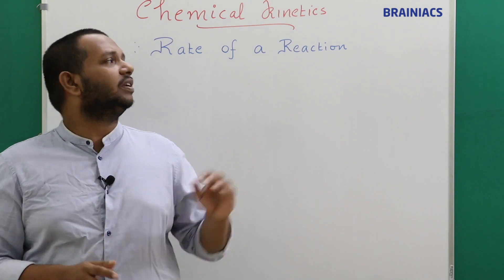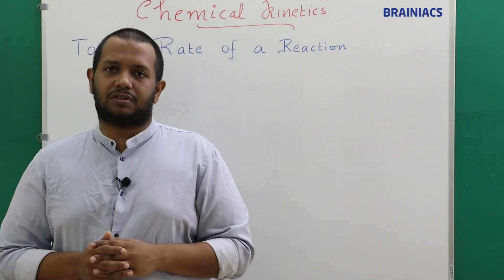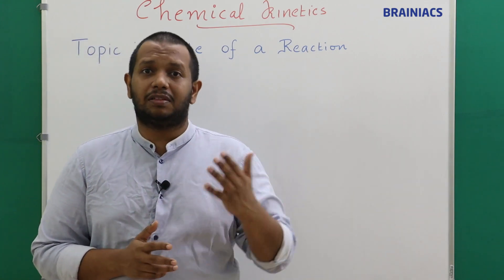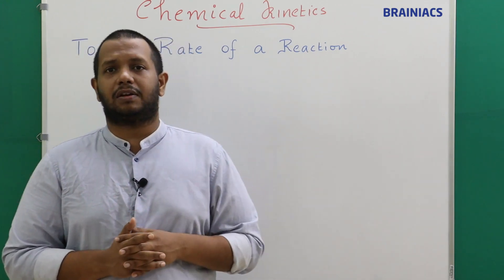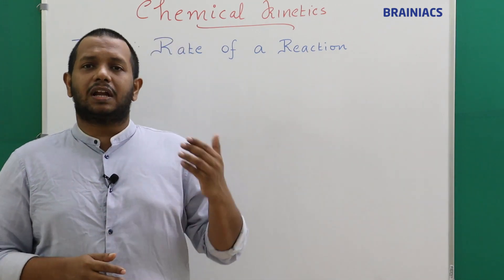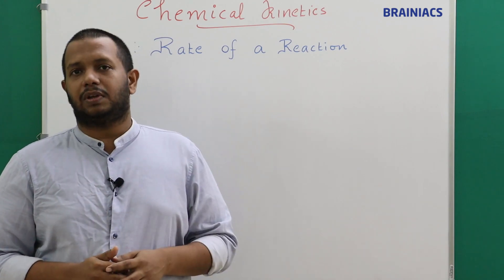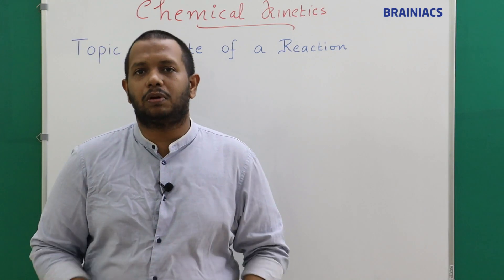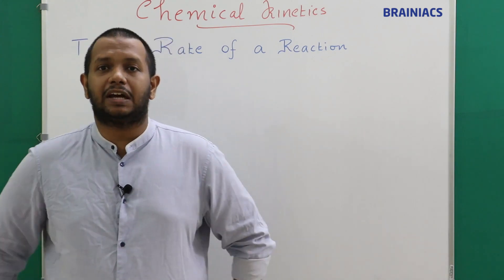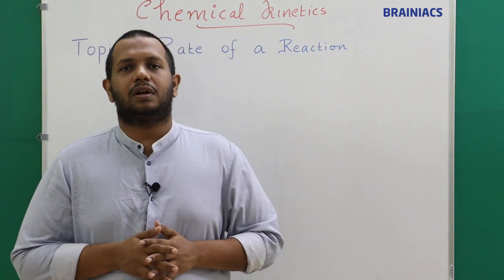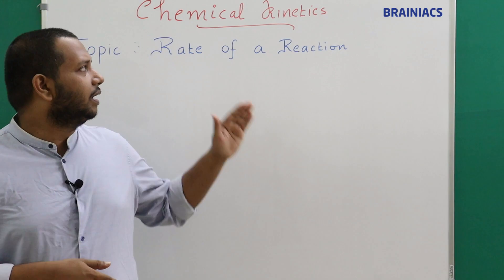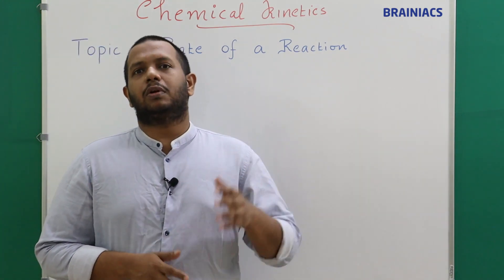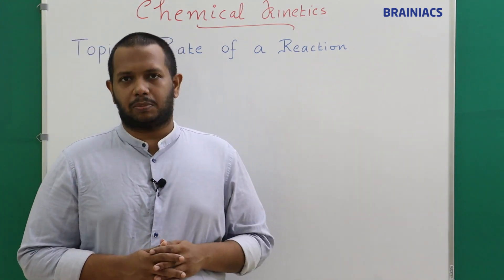The rate of a chemical reaction is our main focus. There are other factors too — for example, the feasibility of a chemical reaction, meaning whether a reaction will happen or not. This is primarily determined from the chapter Thermodynamics, where we learn delta G values and determine feasibility based on that. This chapter mainly deals with the rate of a chemical reaction.